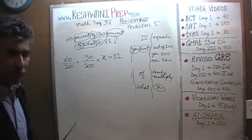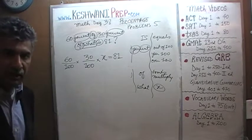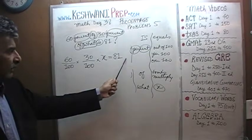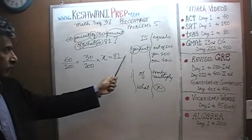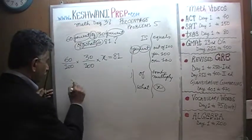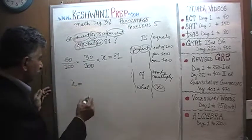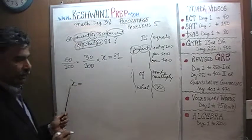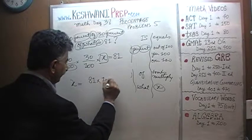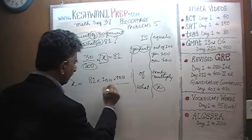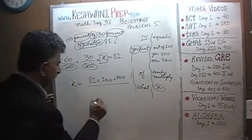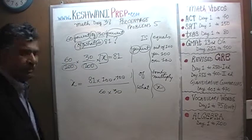Let's solve for X. We want to isolate the X. We bring the 100s to the top by multiplying both sides by 100, which eliminates the denominator. We repeat the process for the second 100. Then we divide both sides by 60 and 30. So X equals 81 times 100 times 100 over 60 times 30.